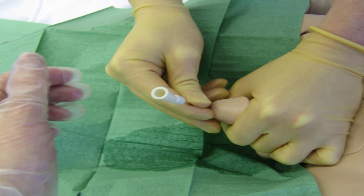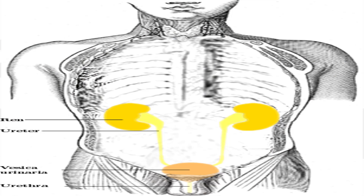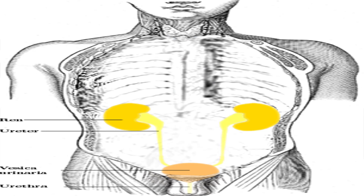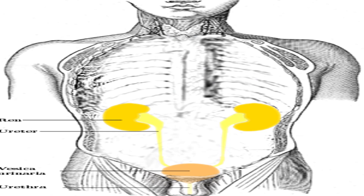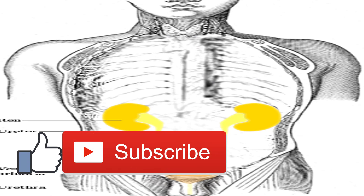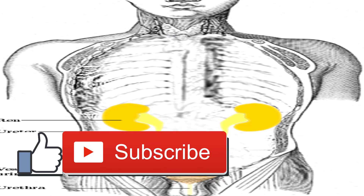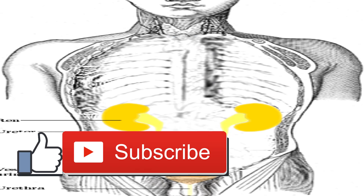Treatments other than antibiotics for bacterial UTIs are being examined. At some point, UTI treatment without antibiotics may be an option by using cell chemistry to change the interaction between the body and the bacteria. There are no home remedies that can cure a UTI, but some things can help your medication work better. Cranberry juice or cranberries don't treat a UTI once it's started; however, a chemical in cranberries may help prevent certain types of bacteria from attaching to the lining of your bladder, which may help prevent future UTIs.